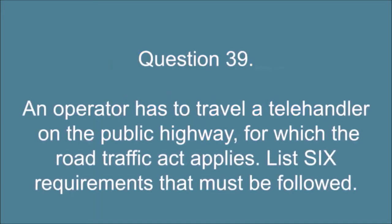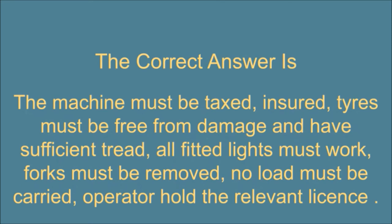Question 39. An operator has to travel a telehandler on the public highway, for which the Road Traffic Act applies. List six requirements that must be followed. The correct answer is: The machine must be taxed, insured, tires must be free from damage and have sufficient tread, all fitted lights must work, forks must be removed, no load must be carried, operator hold the relevant license.